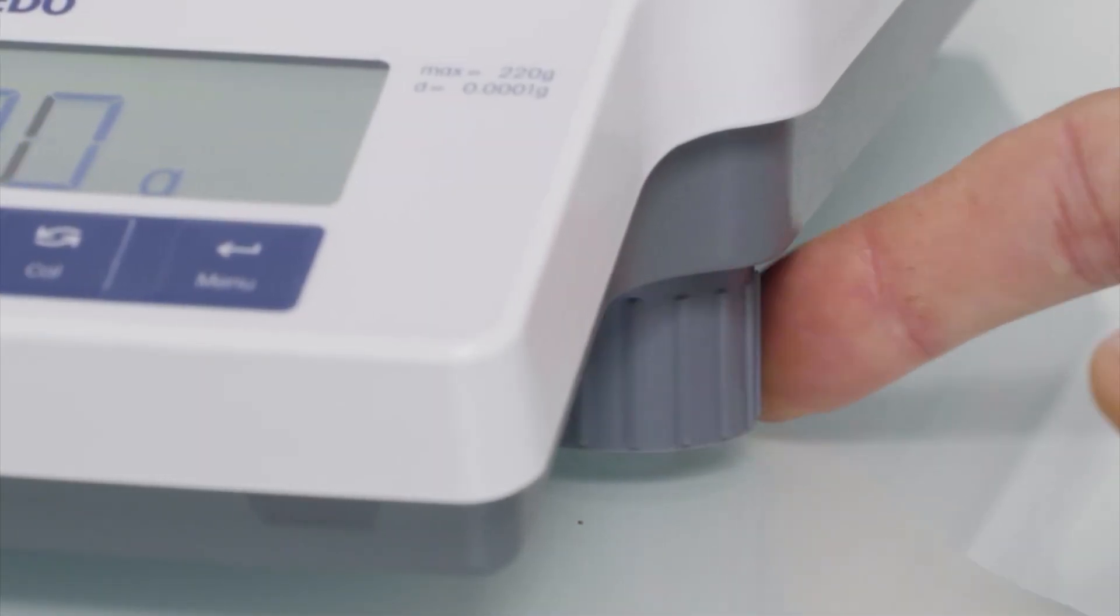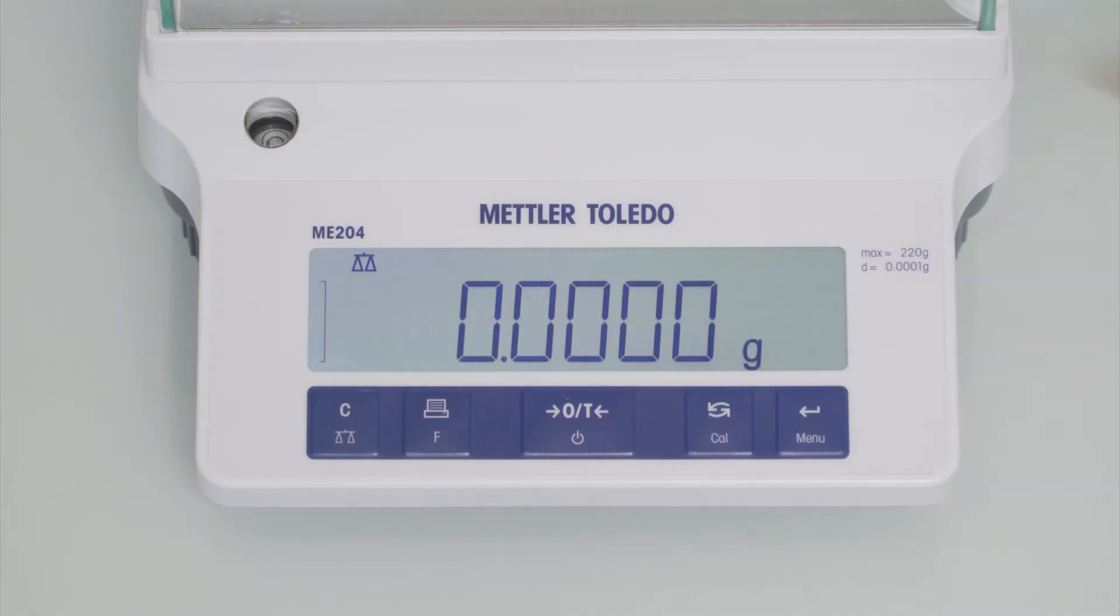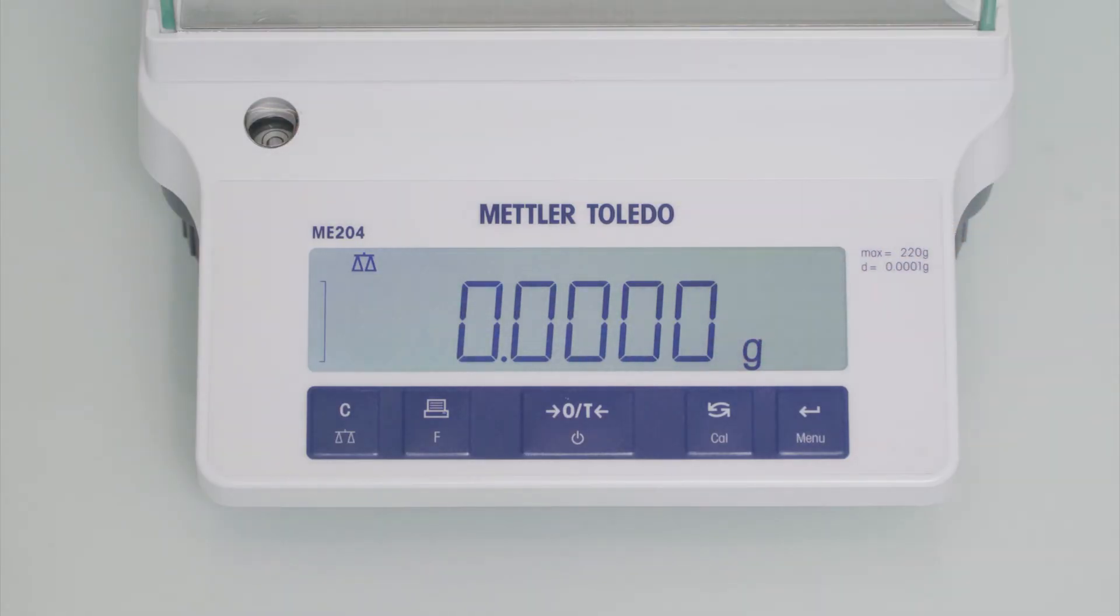Moreover, two large adjustable feet help you to level your balance quickly. The level indicator is at the front so it's easy to check and ensure your balance is working accurately.